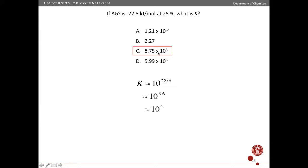Okay so it's this one here c right and that is because we have negative 22.5 we're going to approximate that as 22. Right now the minus sign here disappears because it's minus a negative number. 22 divided by 6 is 3.6 and that's pretty close to 4. So K should be roughly 10,000. Okay and this is the answer that's closest to that.